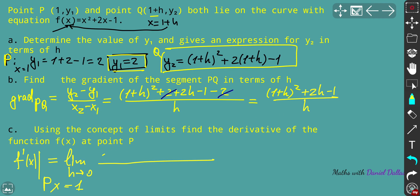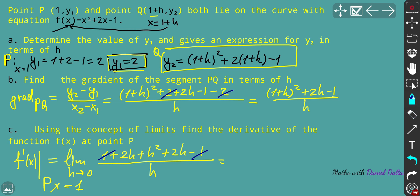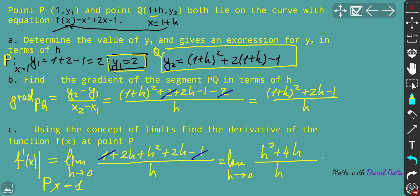Expanding the brackets: (1 + h)² = 1 + 2h + h². So the top of the fraction becomes 1 + 2h + h² + 2h - 1. The ones cancel, leaving h² + 4h over h. Factoring out h from the numerator: h(h + 4) over h. Since h is close to zero but not zero, we can cancel h, leaving h + 4.